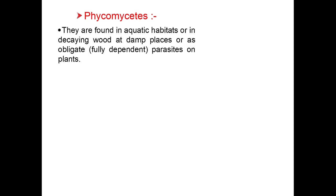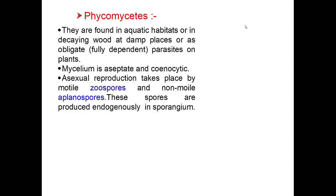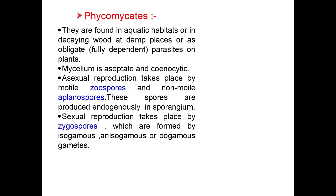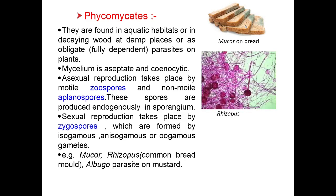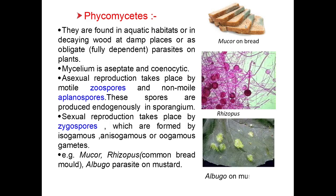Phycomycetes are found in aquatic habitats, in decaying wood at damp places, or as obligate parasites on other plants. Mycelium is aseptate and coenocytic. Asexual reproduction takes place by motile zoospores and non-motile aplanospores, produced endogenously in sporangium. Sexual reproduction takes place by zygospores formed by isogamous, anisogamous or oogamous gametes. Examples include Mucor on bread, Rhizopus (common bread mold), and Albugo, a parasite on mustard.